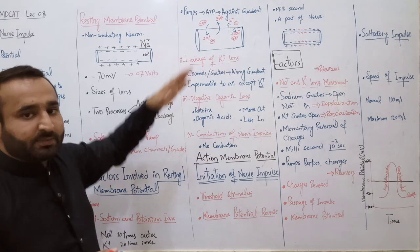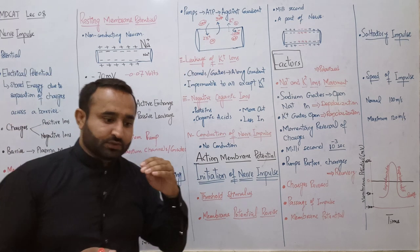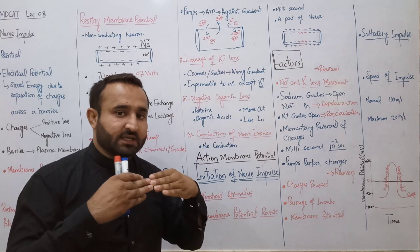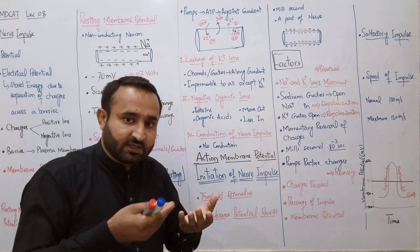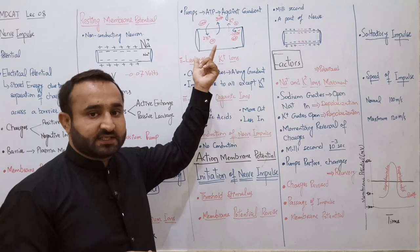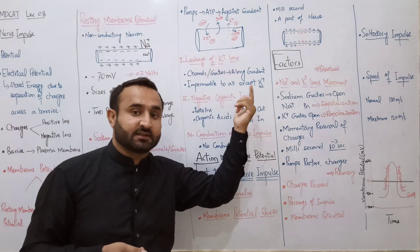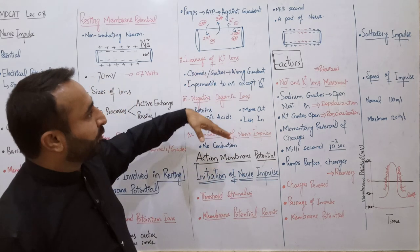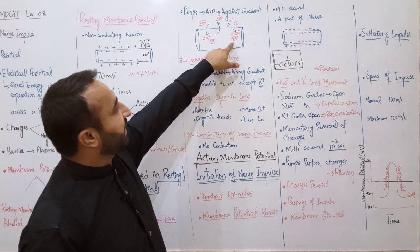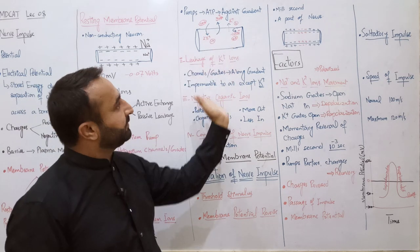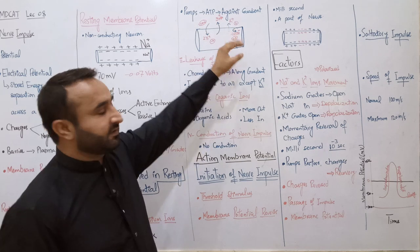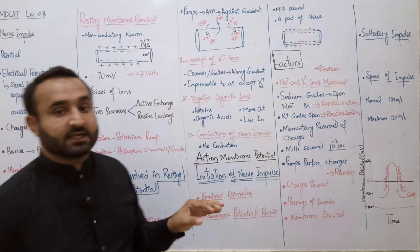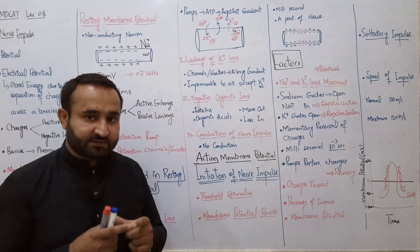دوسری چیز جو باہر positive charge میں contribute کرتی ہے وہ ہے leakage of potassium ions۔ Resting membrane potential میں plasma membrane باقی تمام ions کے لیے impermeable ہے سوائے potassium ions کے۔ Potassium channels open رہتے ہیں اور potassium ions leak out ہوتے رہتے ہیں کیونکہ اندر 20 times زیادہ ہیں - یہ دوسری وجہ ہے کہ باہر positive charge زیادہ ہو جاتا ہے۔